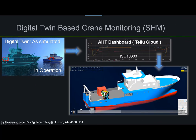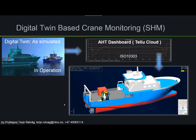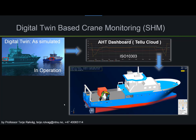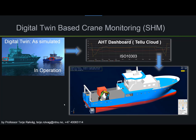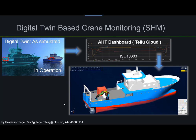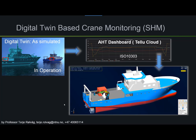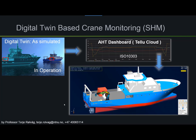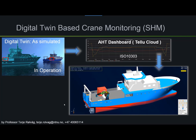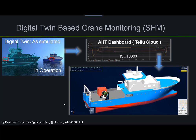Another digital twin implementation in the Arrowhead Tools project is the Gunnerys ship and its Palfinger crane. We can use the dashboard to display all kinds of sensor data from the real physical asset in real life, as well as we can do structural health monitoring of the crane. In this example, you see the crane moving based on sensor data from the crane, and from the digital twin we can output strain and stress time histories to do structural health monitoring.